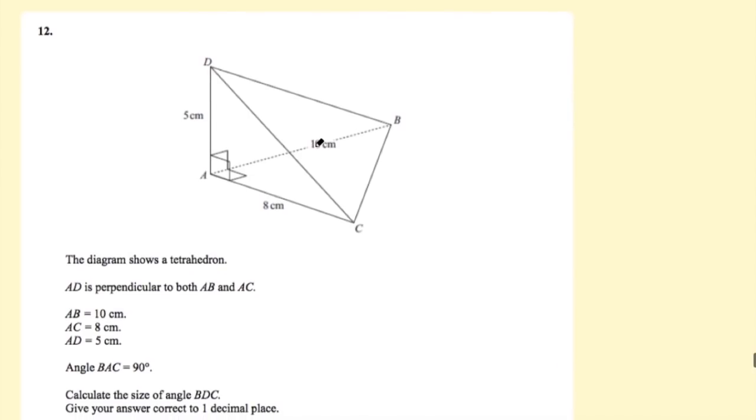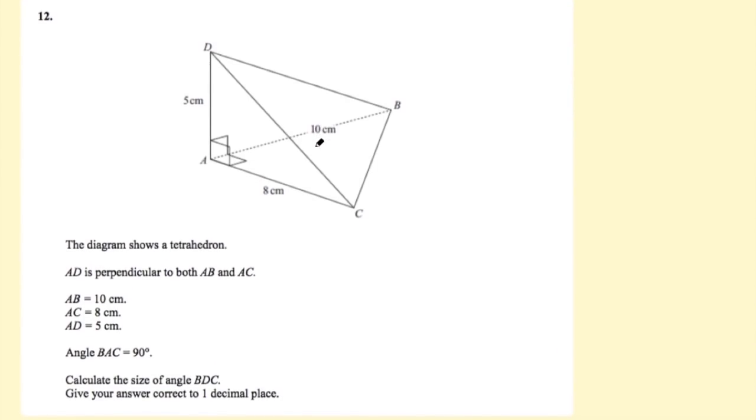Okay so what I want to do is look at an example from the practice sets, the Edexcel practice set, so this is an exam question taken out of practice set one I think and it says the diagram shows a tetrahedron, AD is perpendicular to both AB and AC, AB equals 10 centimeters, AC equals 8 centimeters, AD equals 5 centimeters, angle BAC equals 90 degrees, calculate the size of angle BDC, give the answer correct to one decimal place. Okay so what they're telling us is that all of these sides are at 90 degrees and they've already marked the side lengths on the diagram and we're looking for this angle in here.